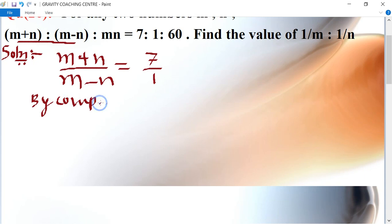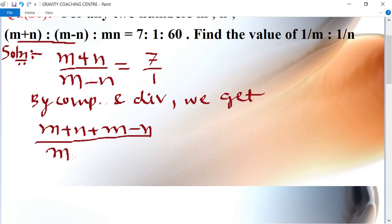By componendo and dividendo we get: (m+n) plus (m-n) upon (m+n) minus (m+n), equal to 7 plus 1 upon 7 minus 1.